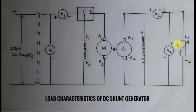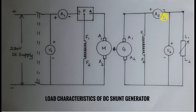This is the load which is shown here in virtual lab. The load which we are going to use is actually the lamp load. In order to measure the terminal voltage of this generator we are using the voltmeter V2, and in order to measure the load current we are using the ammeter A2.